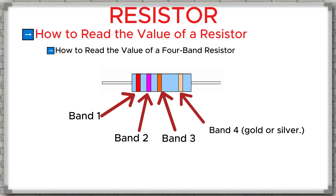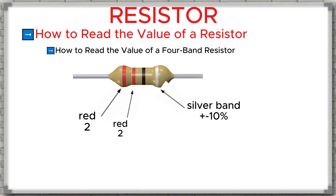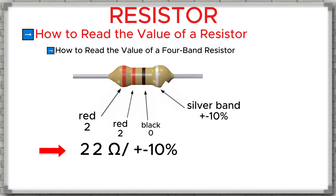Now let's practice reading the value of a few resistors. As you can see in the picture, we have a resistor here. We can see a silver band — this is the fourth band, the last band. So, the first band is red, the second band is also red, the third band is black, and the fourth band is silver. According to the color code chart: band one, red, means 2; band two, red, means 2; band three, black, means zero, so no extra zeros are added; band four, silver, means a tolerance of 10%. Therefore, this resistor has a value of 22 ohms with a tolerance of ±10%.